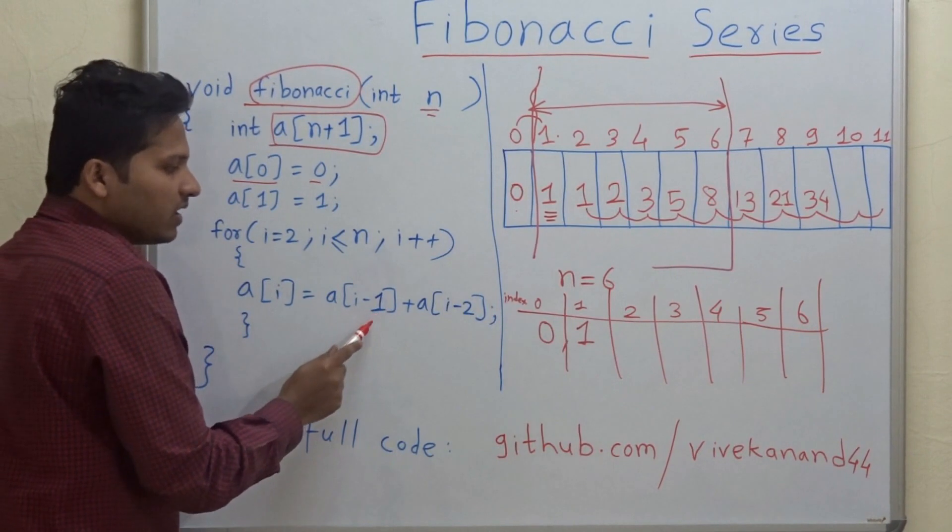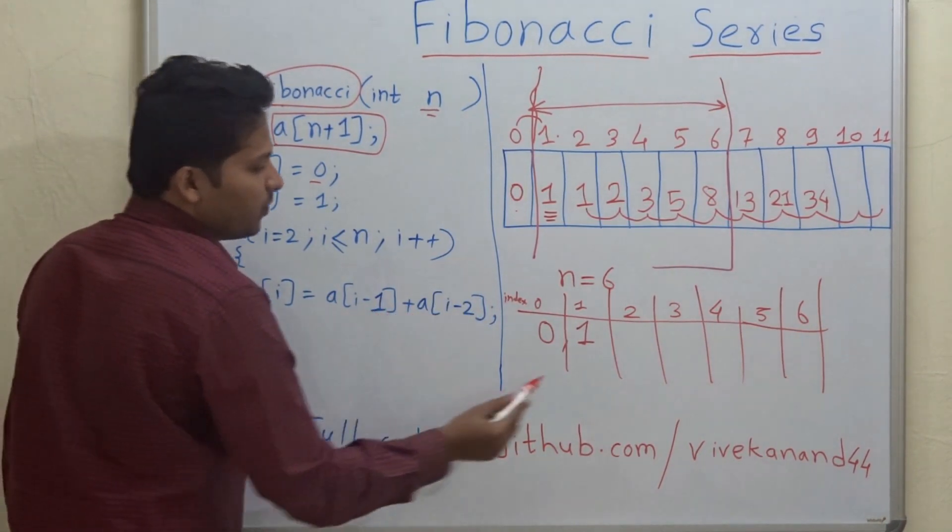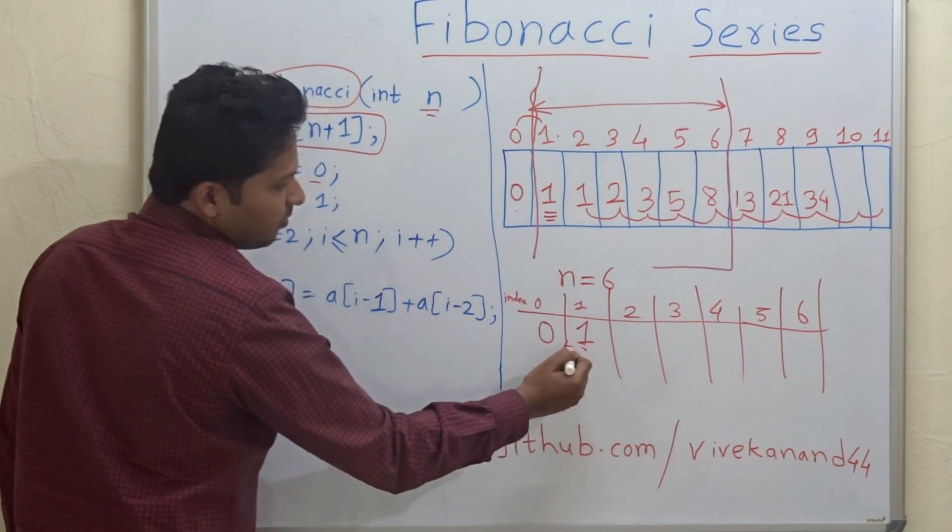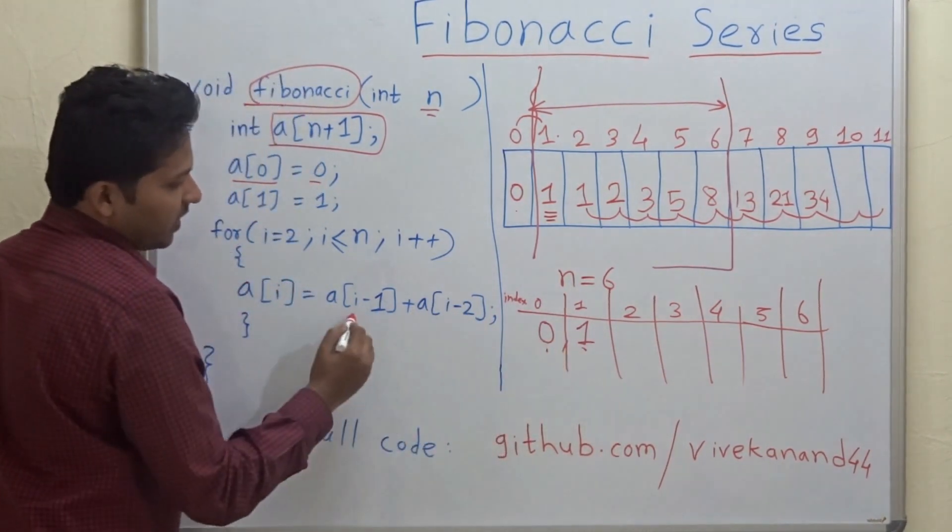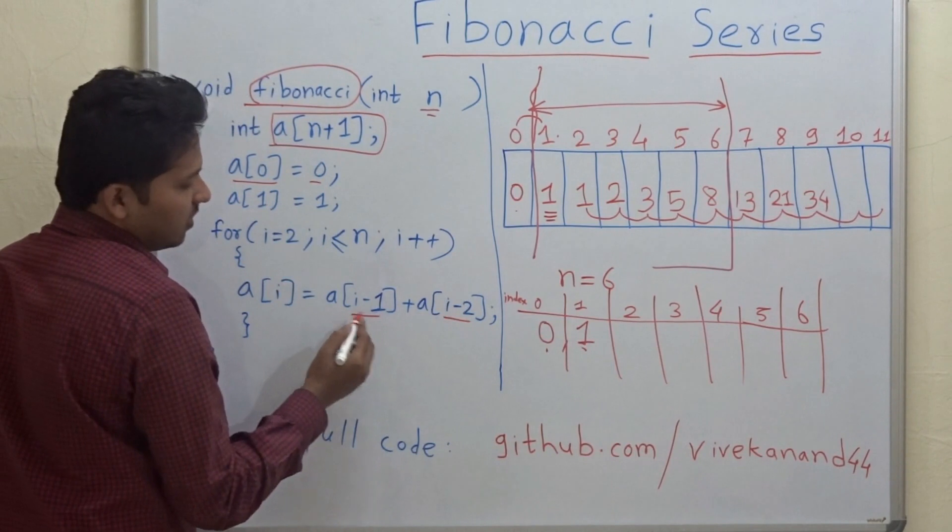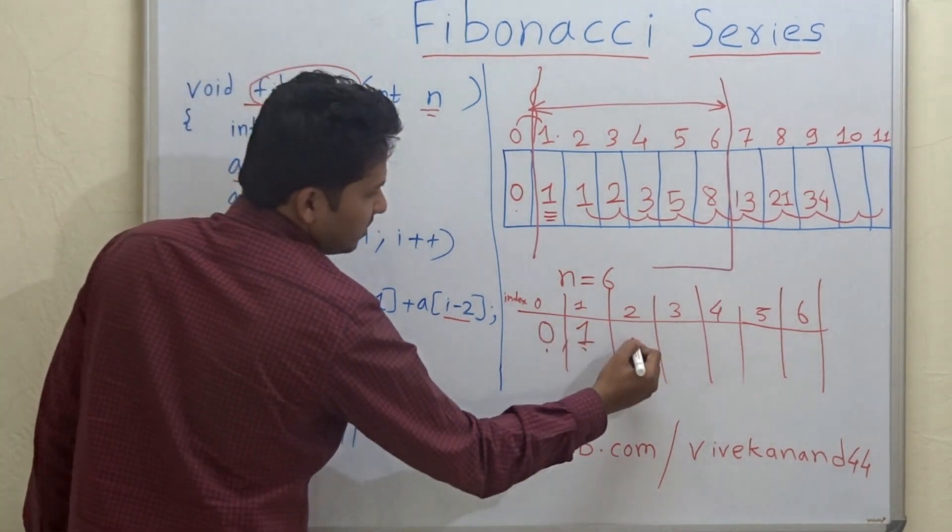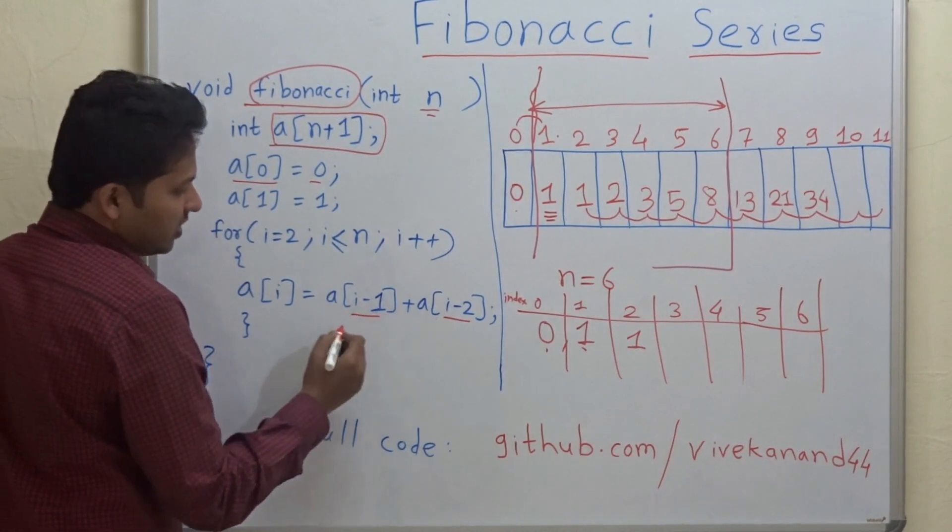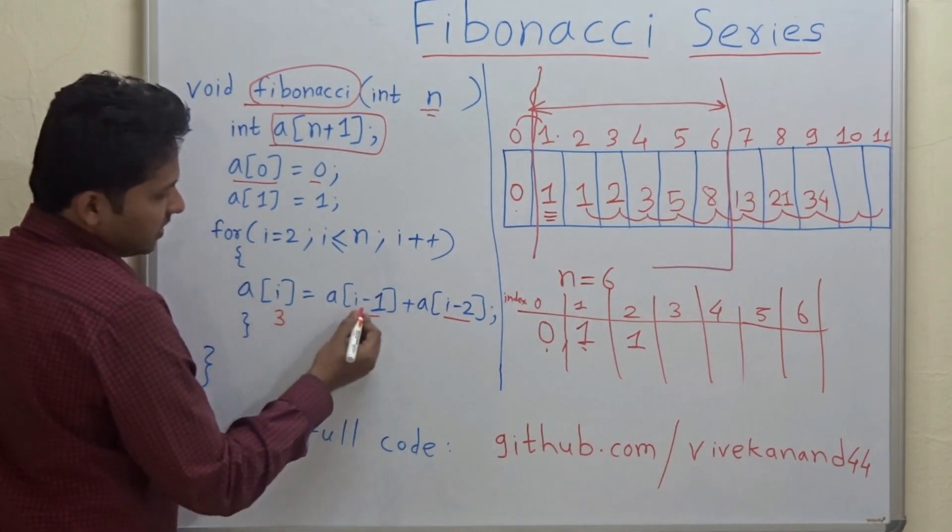So a[i] is equal to a[i-1] plus a[i-2]. So a[2] will be equal to a[1] plus a[0]. It will be 0 plus 1 equal to 1. Now if your i is 3, then i minus 1 is 2 and i minus 2 is 1.